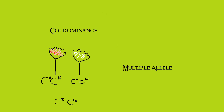Another example of co-dominance is ABO blood groups. You get A blood group, B blood group, AB blood group, and O blood group. O is a recessive allele, so A and B are both dominant to it. However, A and B are co-dominant with each other, which is where the AB comes in. Because the O allele is also present, this becomes a multiple allele system — where there are more than two alleles present for a single gene.